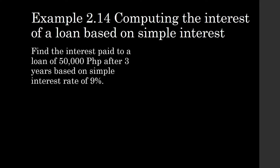Find the interest paid on a loan of 50,000 pesos after three years based on a simple interest rate of 9%. Let us identify what's given. Our principal is 50,000. Our rate of interest is 9%, which in decimal form is 0.09. T is 3 years.